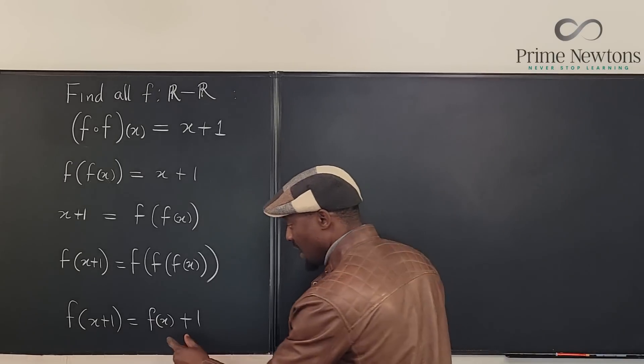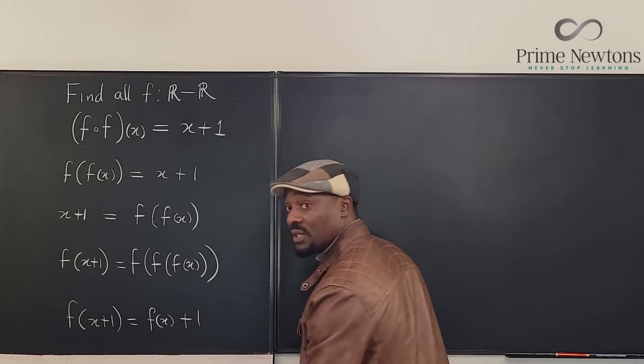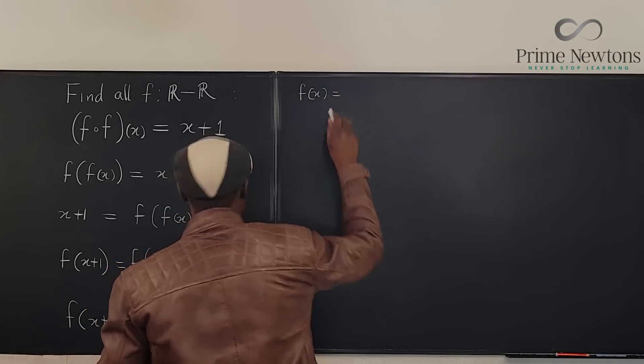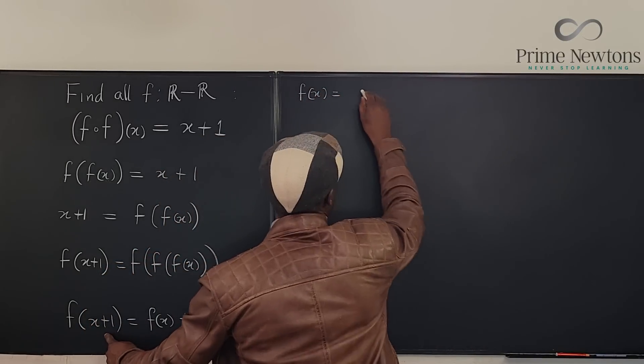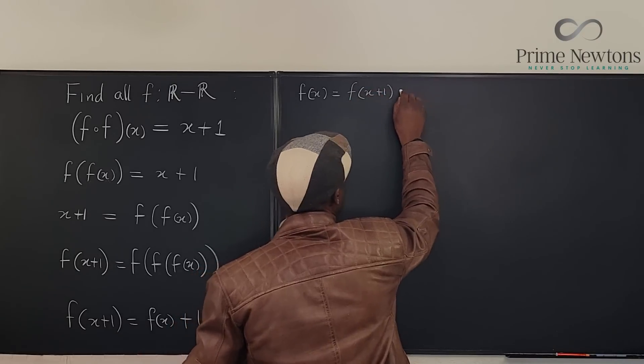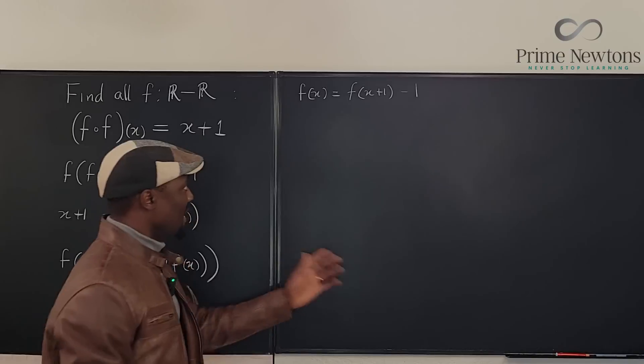So what I'm going to do is do a bunch of nice substitutions and see if I can get rid of this guy somehow. So what I'm going to do is I'm going to move this one over to this side so that what I have will be f of x will be equal to f of x plus one minus one.